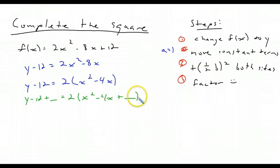But remember, this is b divided by 2 squared, and that's what I'm adding to both sides. So my b in this one is negative 4. b divided by 2 is negative 2. When I square that, it's going to be plus 4. So I have 4 on the inside here.